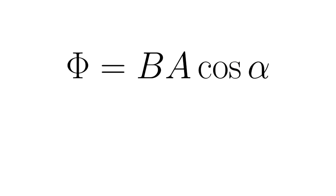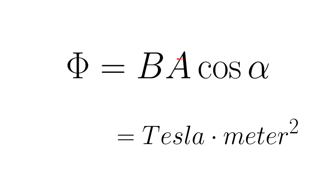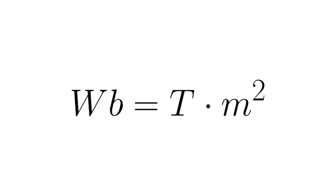What about the unit of magnetic flux? We can find it using the equation. Magnetic field strength is measured in tesla and area is measured in meters squared, so the unit for magnetic flux is tesla times meters squared. In the International System of Units, scientists give it the special name weber. One weber is the amount of magnetic flux through a surface when one tesla of uniform magnetic field is applied to a surface of one meter squared area.